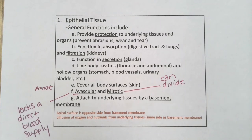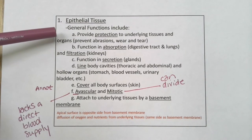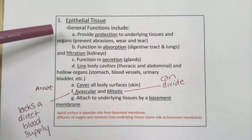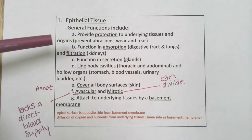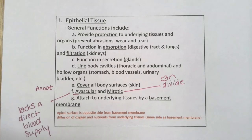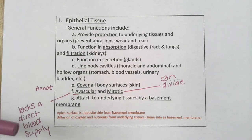Let me start at the top as far as explanation. The general functions of epithelial tissue include: providing protection to underlying tissues — preventing abrasions and wear and tear — functioning in absorption in the digestive tract and lungs, filtration in the kidneys, and secretion of substances from glands.